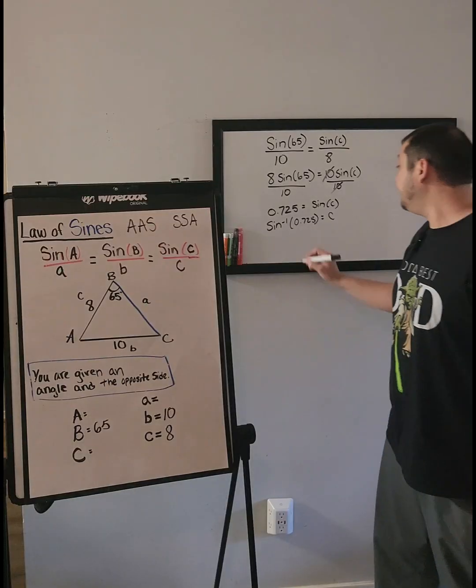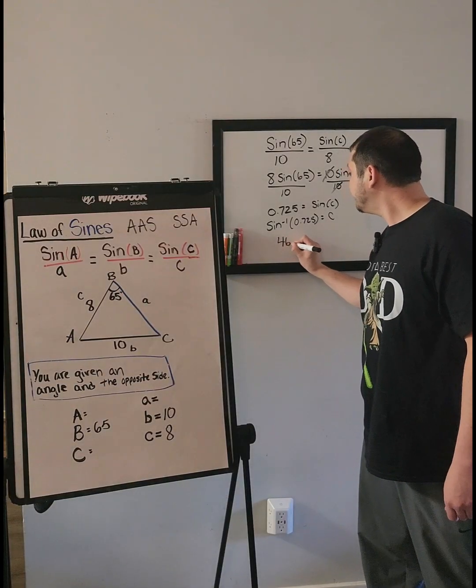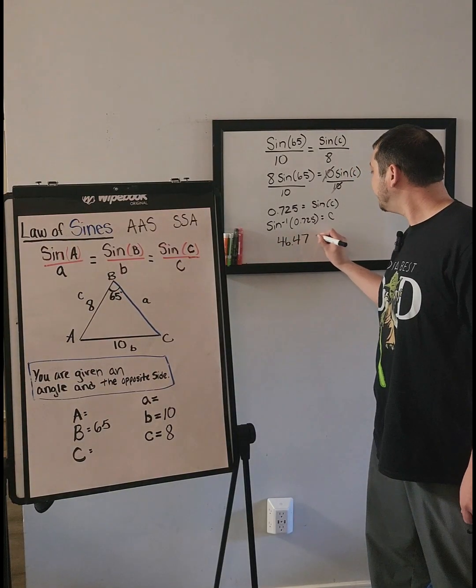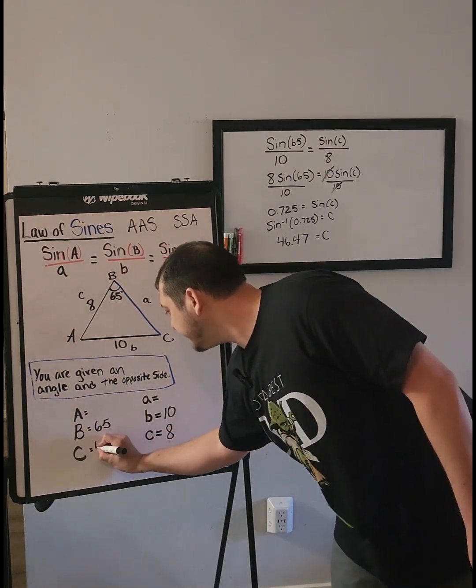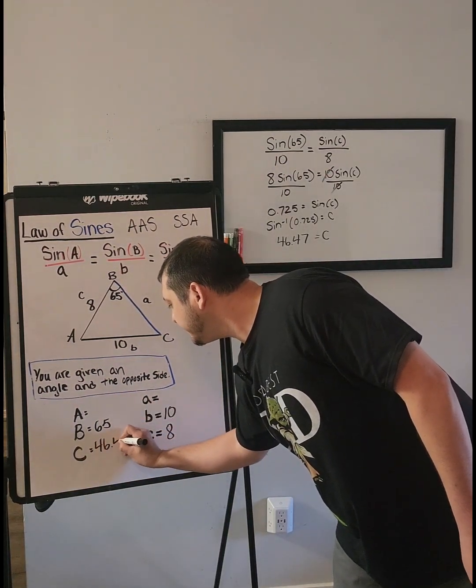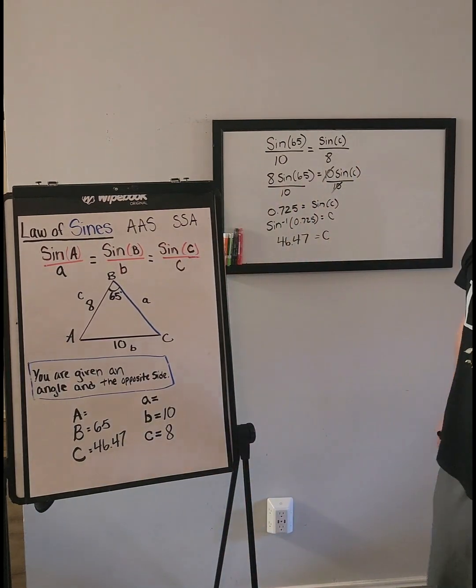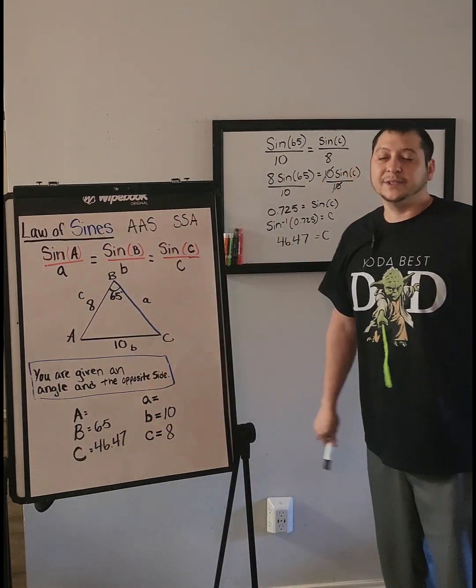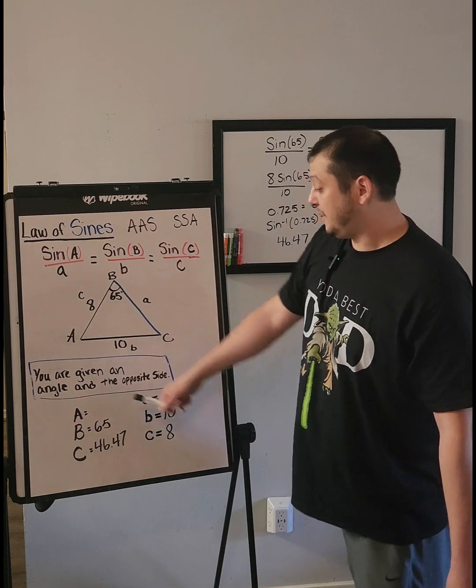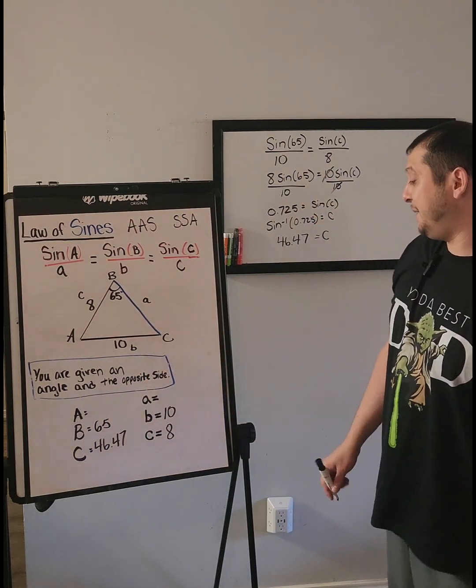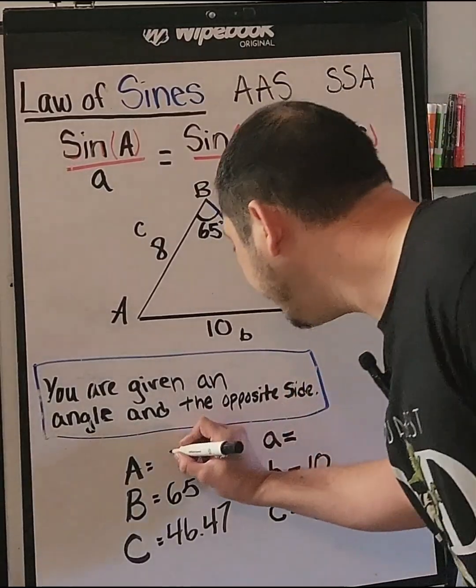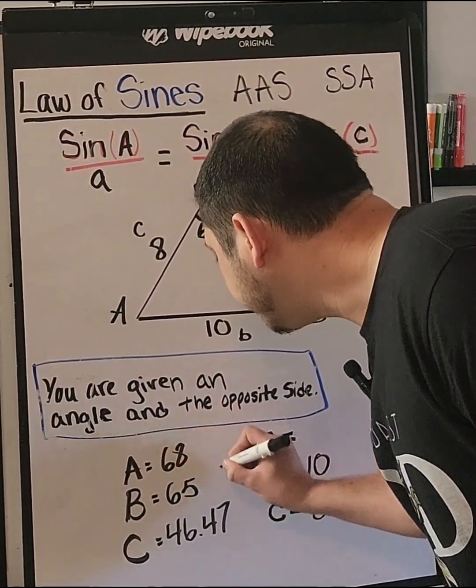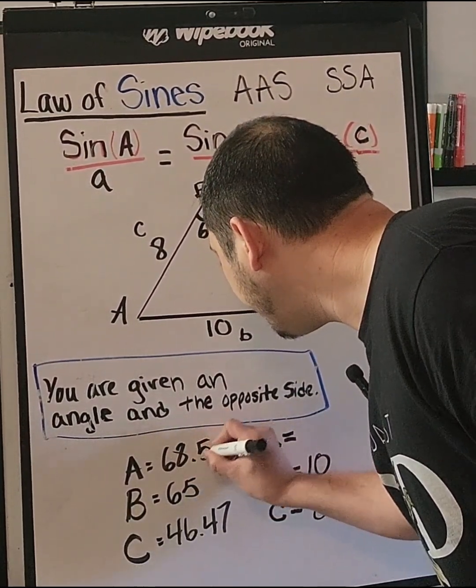That angle is 46.47, which is angle C. Since you know two angles of this triangle, could we find the third angle? They add up to 180. Definitely. It is 68.53.